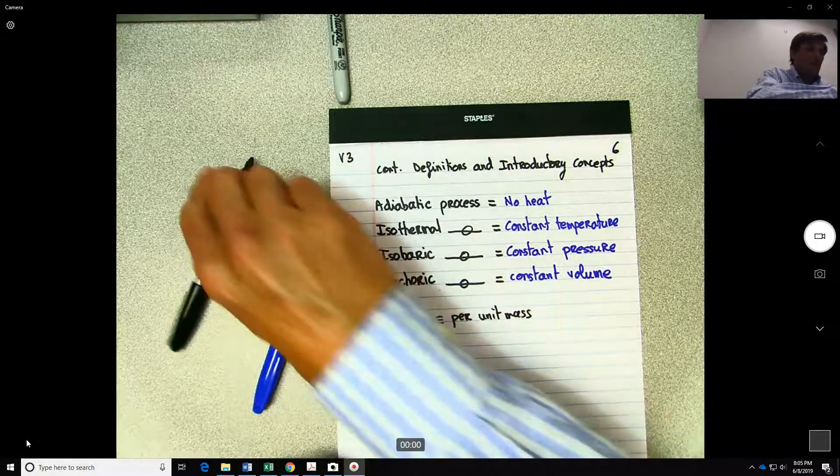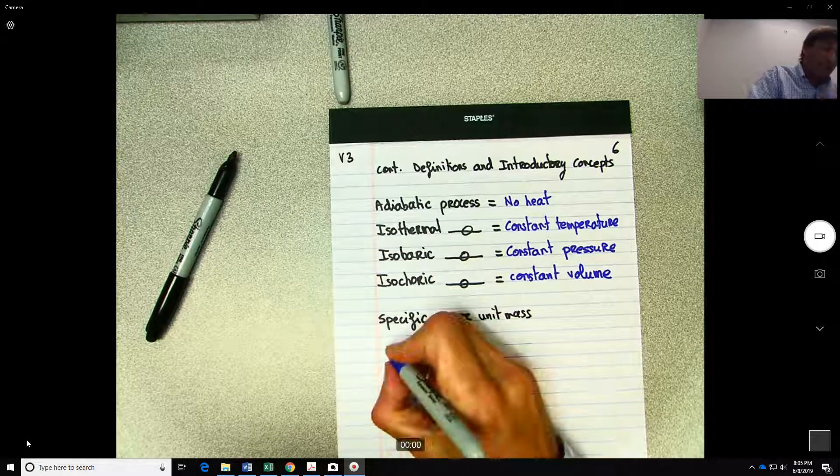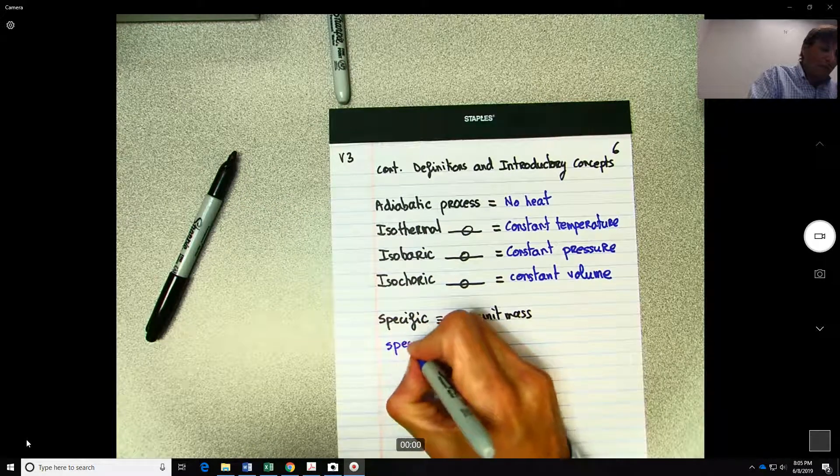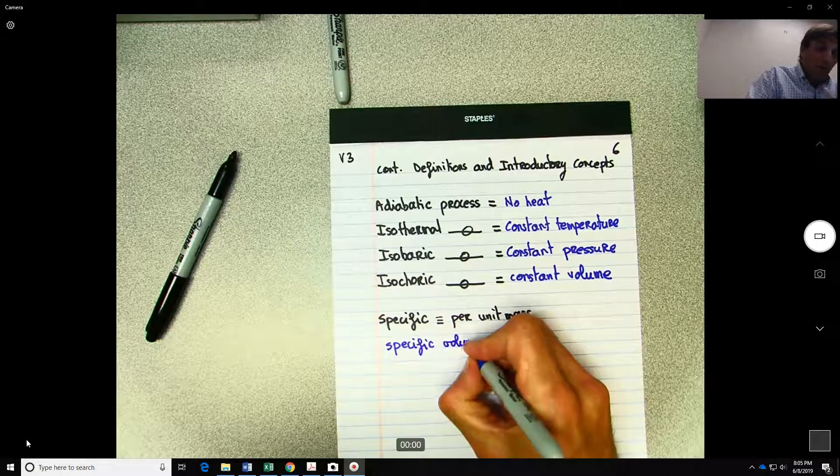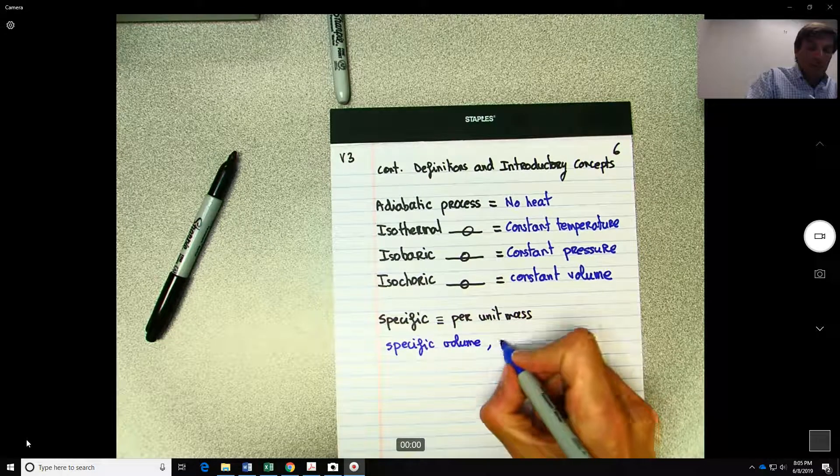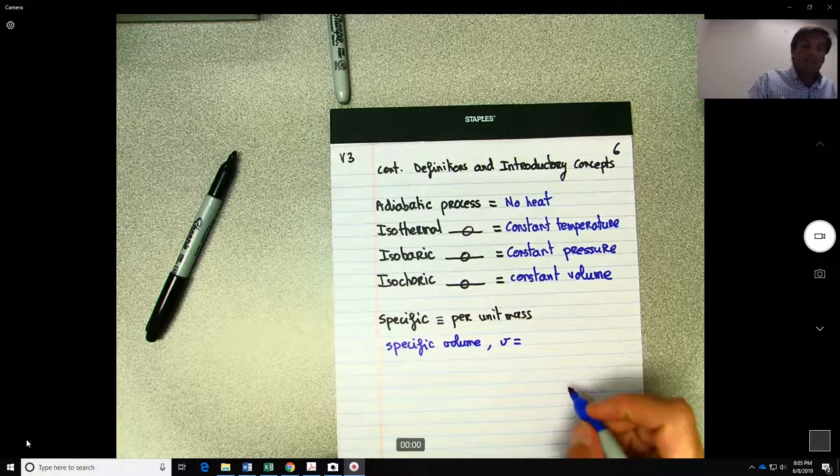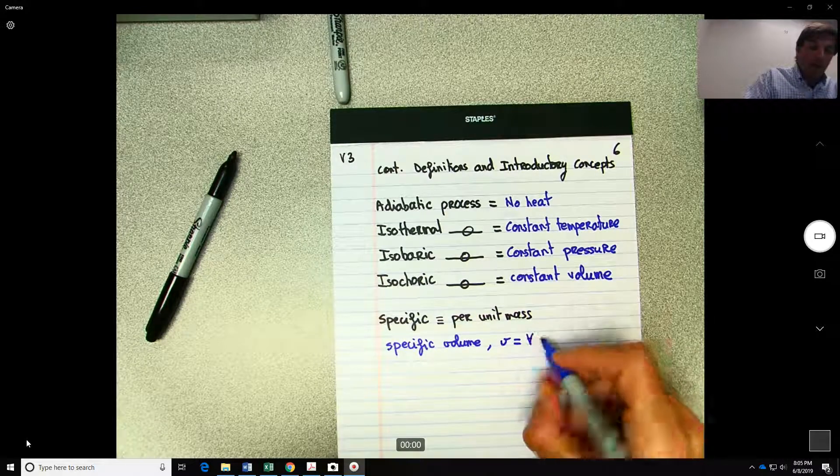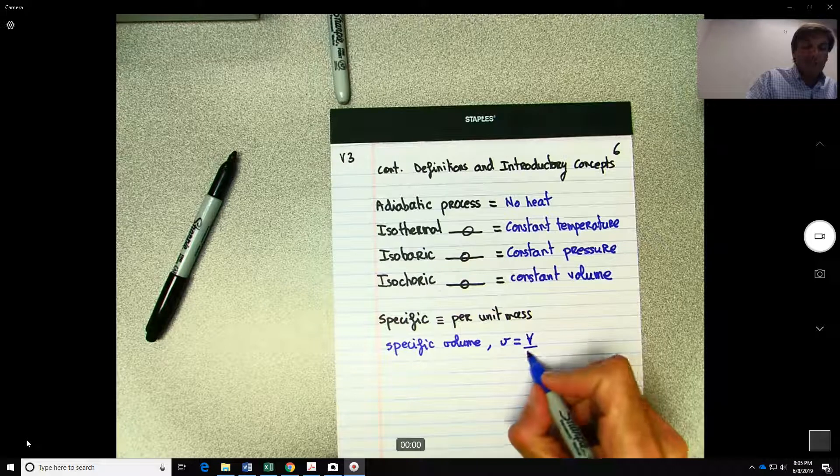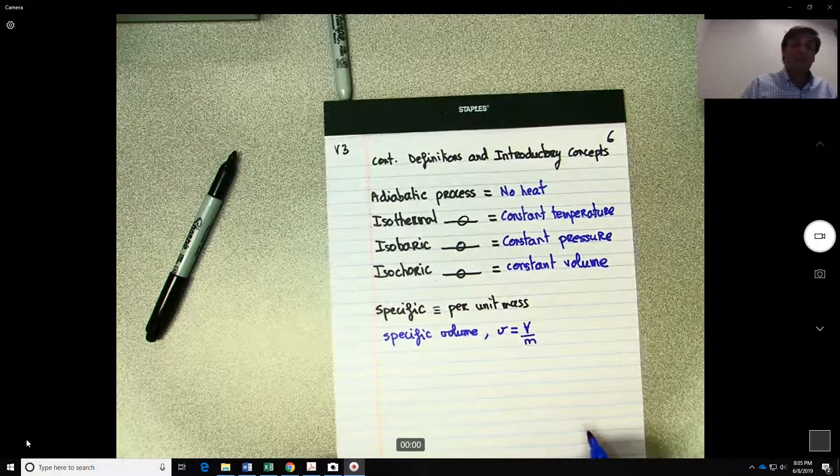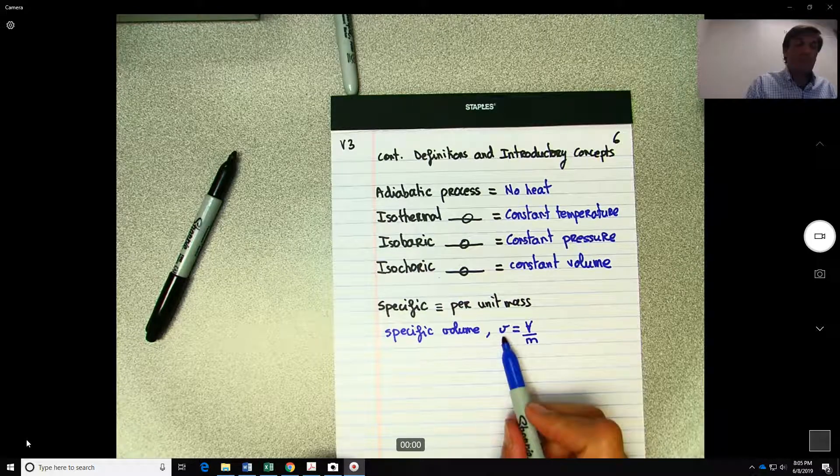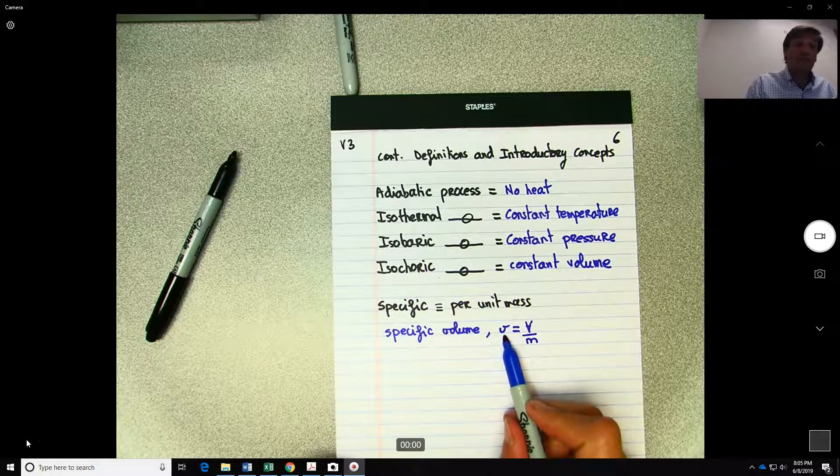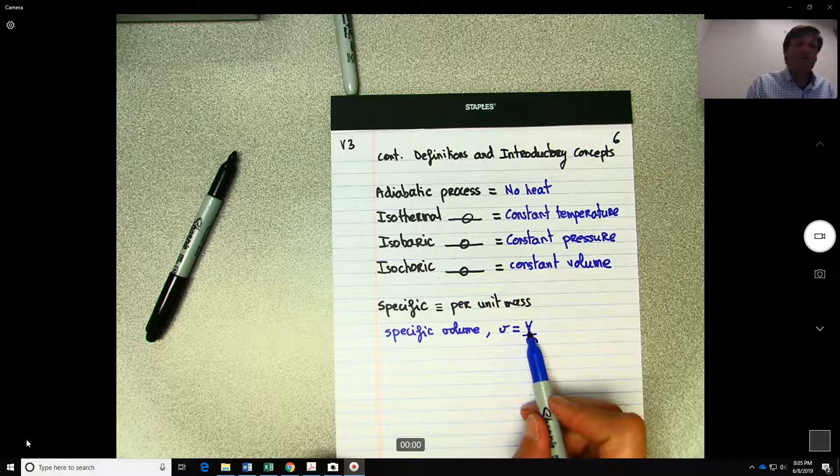So for example, you will have the specific volume, which is defined as lowercase v equals uppercase V divided by mass. That's another thing you will find that throughout the book, generally they use the lower cases to define the specific value and the upper cases to define the quantity.